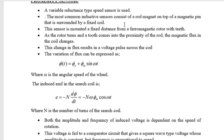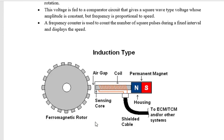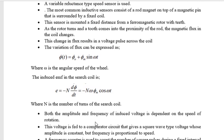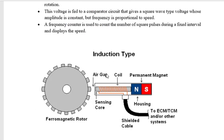The most common inductive sensor consists of a rod magnet on top of a magnetic pin that is surrounded by a fixed coil. This is the arrangement: a ferromagnetic rotor with alternate projections, and a permanent magnet with a rod where you are winding the coil. This sensor is mounted at a fixed distance from the ferromagnetic rotor, which has a large number of teeth.